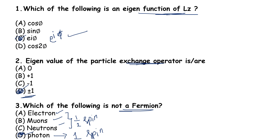To recap: which of the following is an eigenfunction of Lz? C is the answer. The eigenvalue of the particle exchange operator is plus or minus 1. Which of the following is not a fermion? Photon, electron, muon, neutrons — electron, muon, neutron have half spin value. Photon has spin 1, so photon is the correct answer — option D.